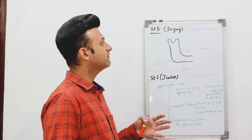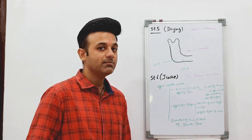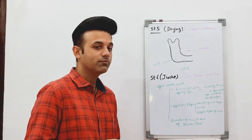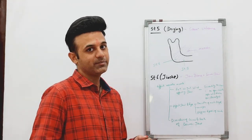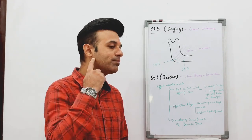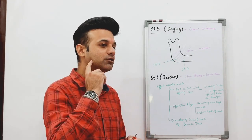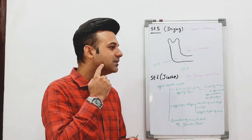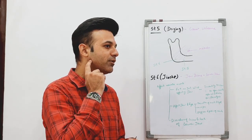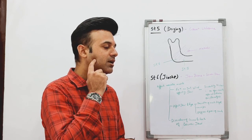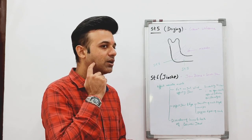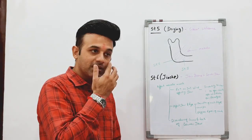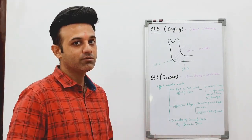Stomach 5 is known as De Ying in Chinese, which means Greater Welcome. To locate it, ask the patient to clench the mouth — you will feel a depression in front of the muscle, and that is Stomach 5. If you move one finger breadth from the posterior border and from the lower border of the angle of the jaw, you will be on Stomach 6, which is very near to the angle of the mandible.